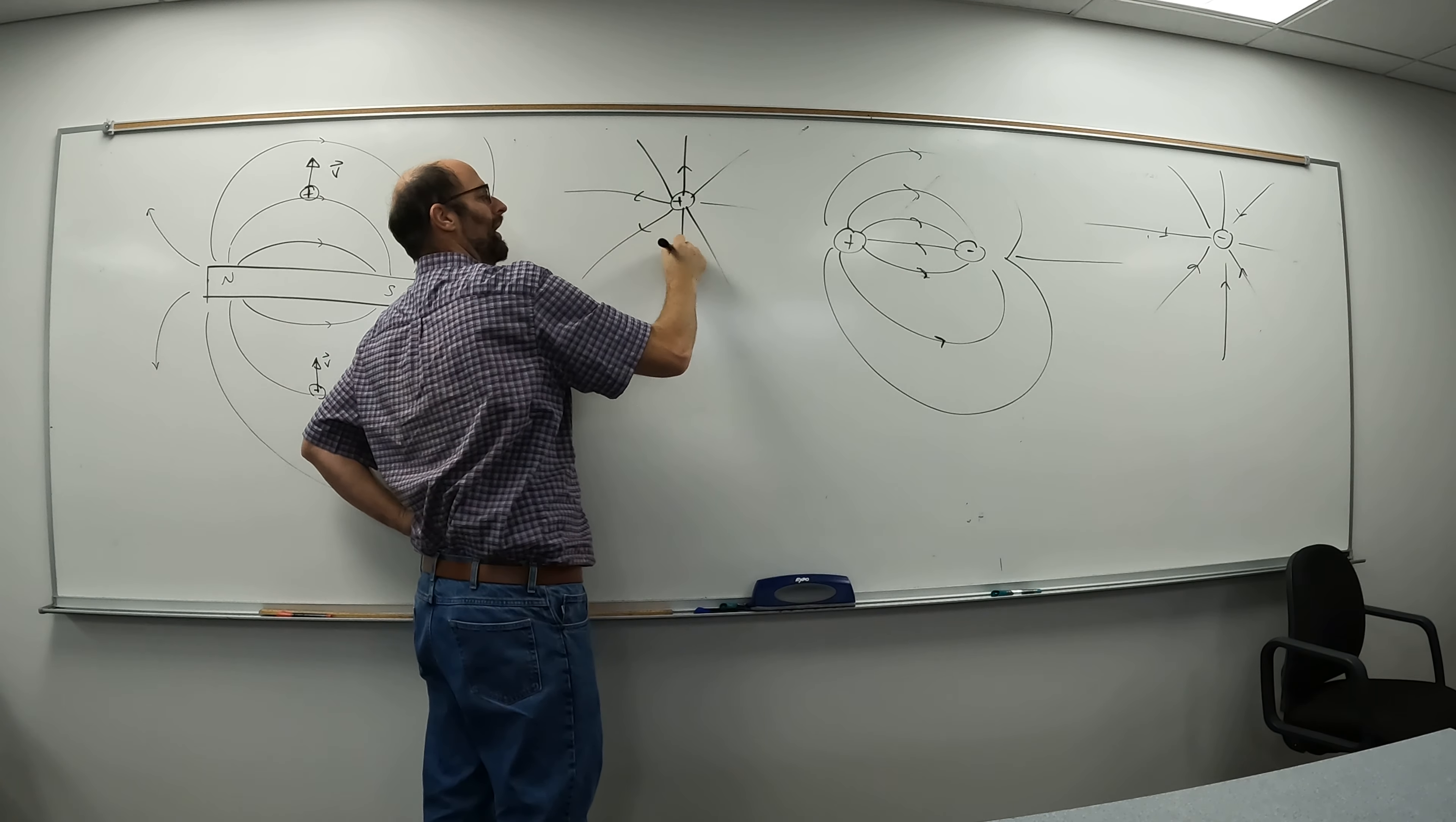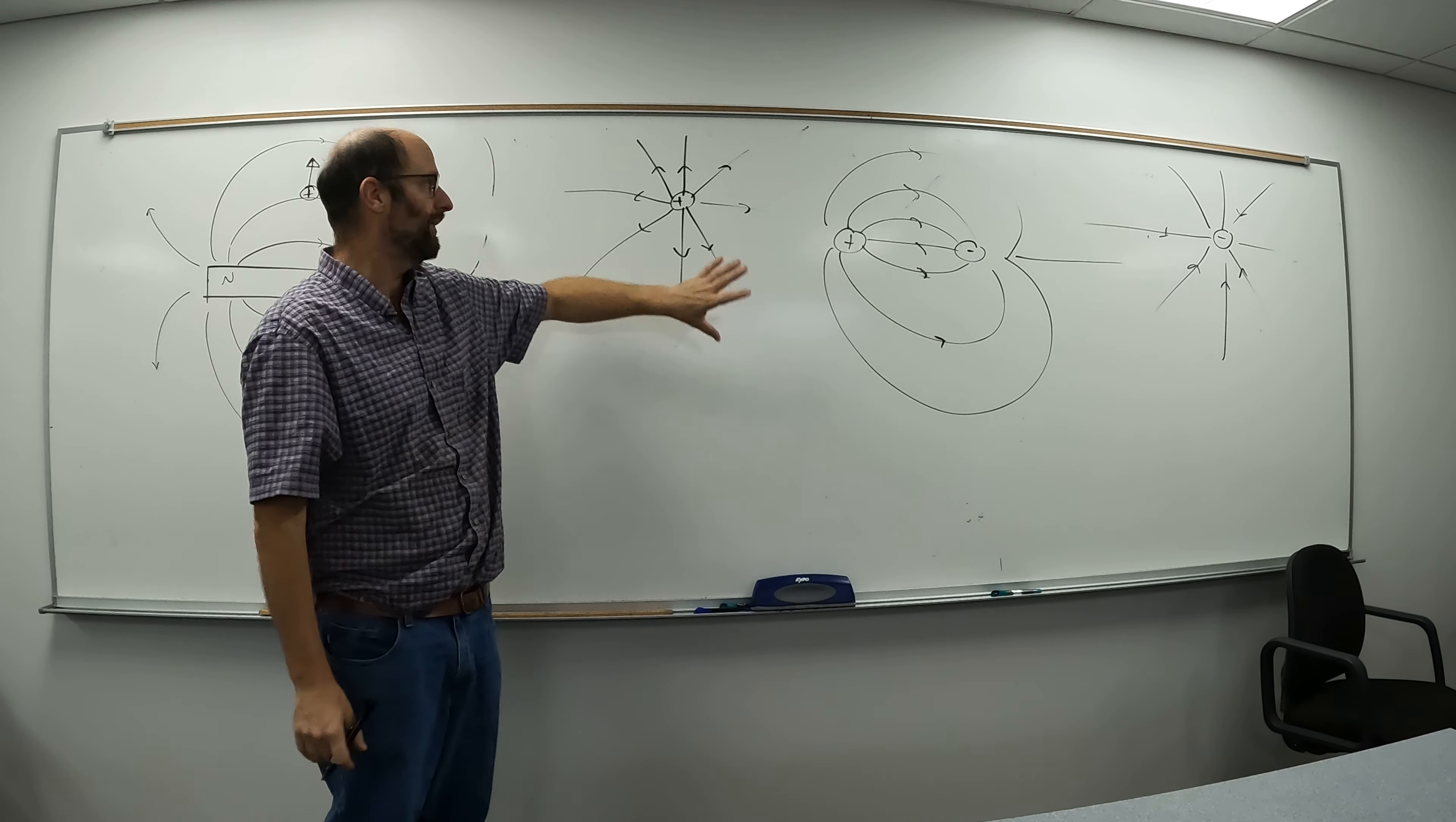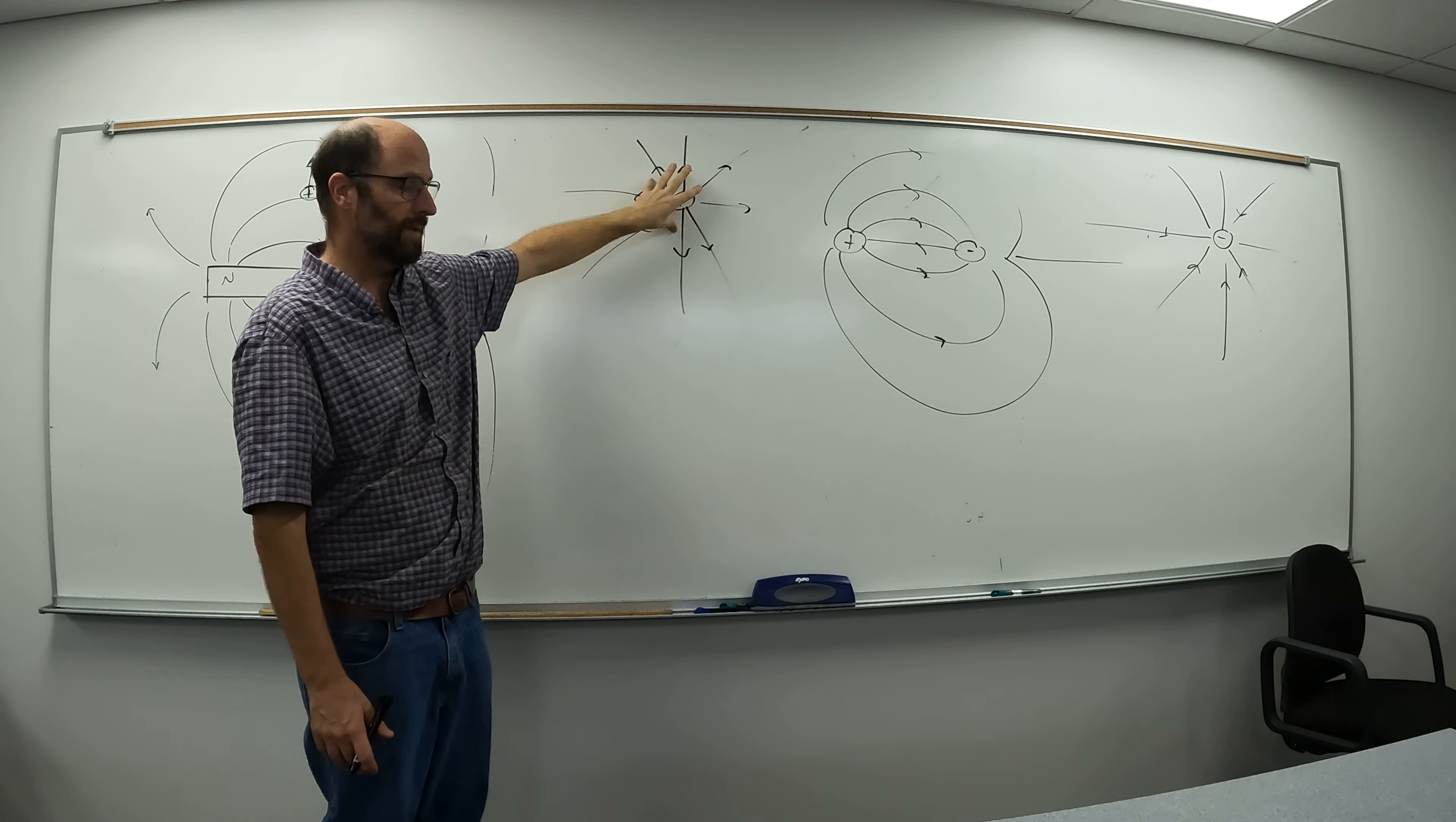I can take the positive charge, put it by itself, and the field lines radiate away symmetrically. The point is that here you can take a dipole apart into two separate entities, and they have their own electric field pattern around them. These are called electric monopoles.